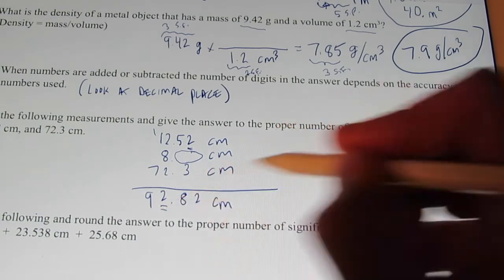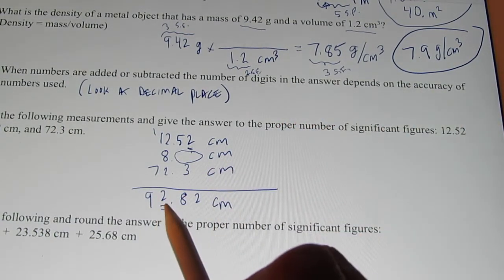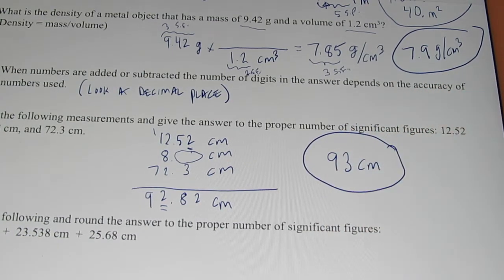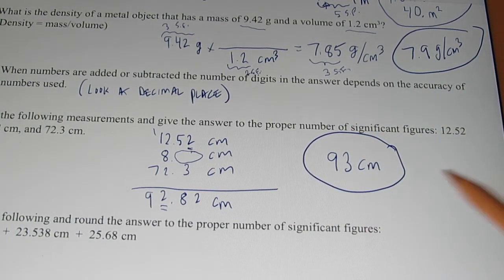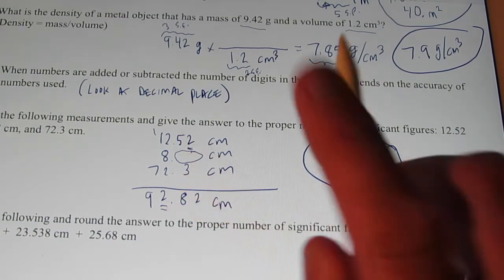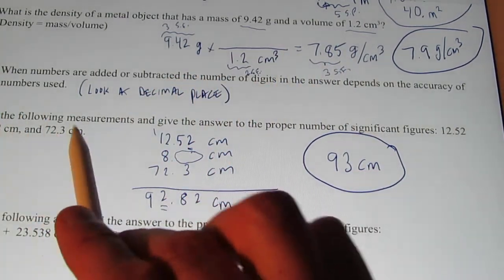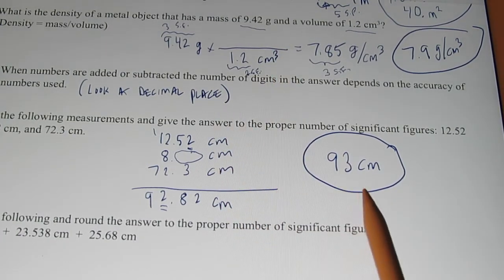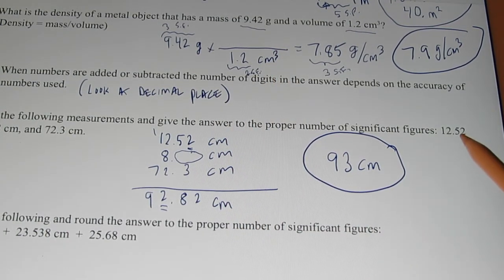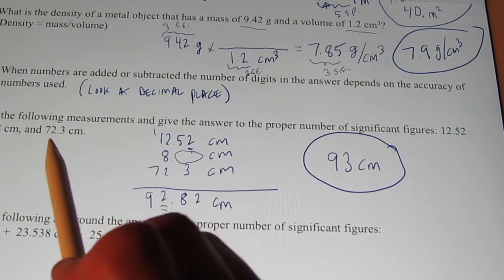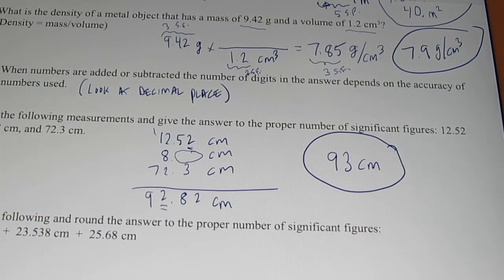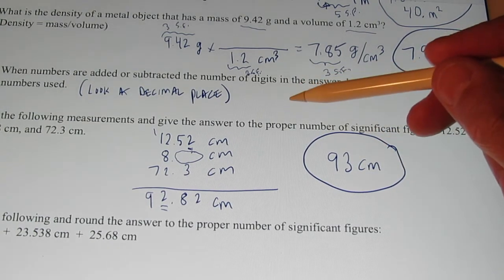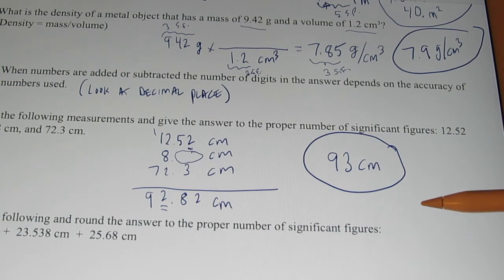So, I want to round this off to the nearest whole number. So, 92.82 becomes 93 centimeters. That would be my answer. So, you'll notice when I add, I don't look at the number of sig figs in my measurements. I look at the decimal place. So, when you add, often times you can even gain a significant figure. Notice this had 4, this had 1, this had 3. Your answer had 2 sig figs. Because, once again, when we add, or when we subtract, we look at the decimal place. We don't look at the number of sig figs.